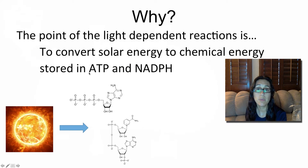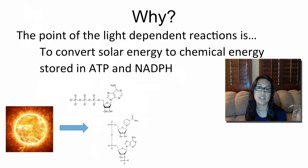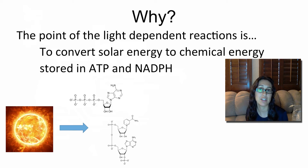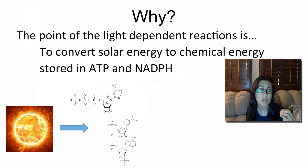The whole point of the light-dependent reactions is to convert the energy from the sun — solar energy — into chemical energy stored in ATP and NADPH. That's the focus of the light-dependent reactions, the very first stage of photosynthesis. So it's not even to make our sugar yet, not even to make glucose yet. It's focused on trapping the energy as chemical energy instead.